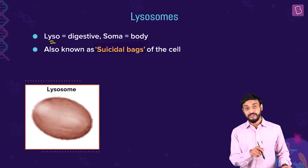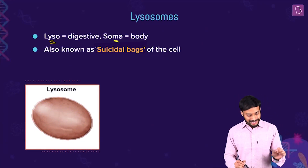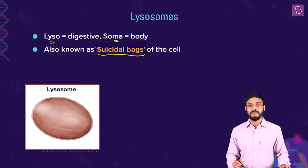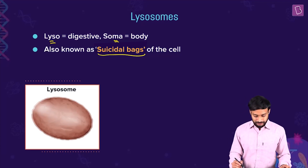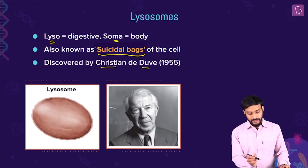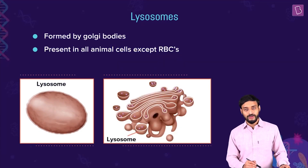Lysosomes - 'lyso' means digestive, 'soma' means body - so lysosomes means digestive body. They are also known as the suicide bags of the cell. We'll talk about why. Lysosomes were discovered by Christian de Duve in 1955. Now let us look into the structure of the lysosomes - how they look and what their function is.